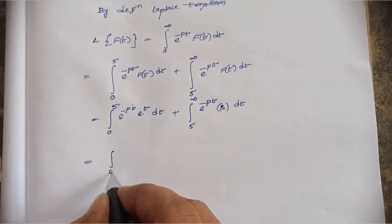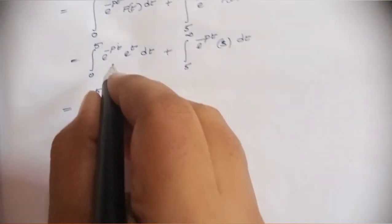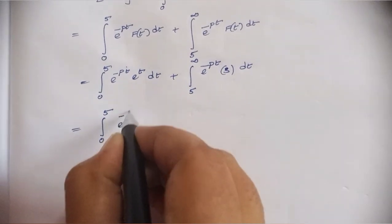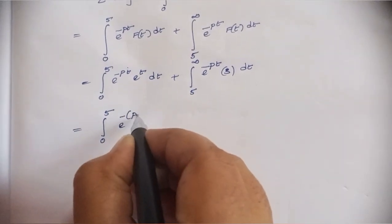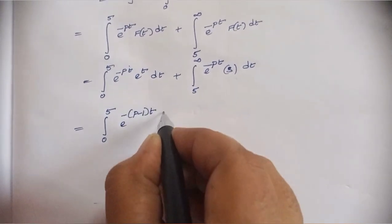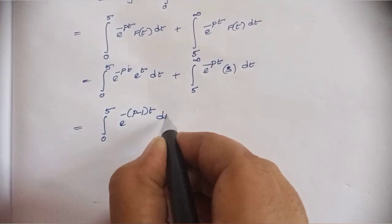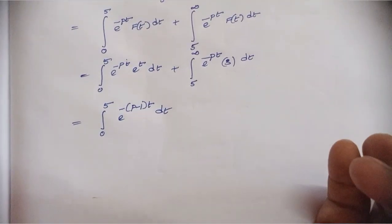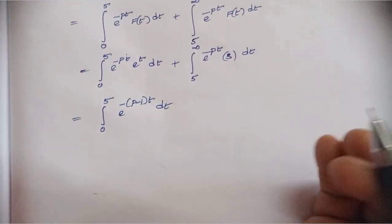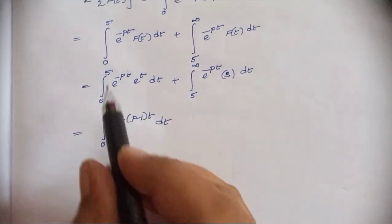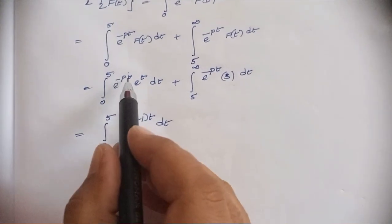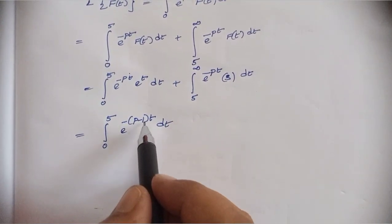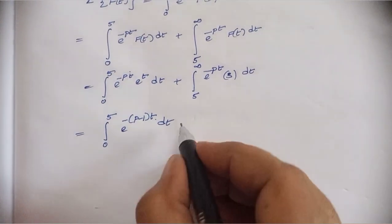The first integral from 0 to 5 becomes e^(-(p-1)·t) dt. In the second integral, the exponent simplifies: minus p times t, giving e^(-pt).